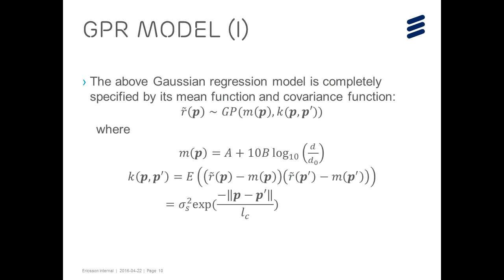So, unlike the conventional RSS model, the Gaussian process regression model introduces correlation between two positions. From the covariance function, we can see that for positions that are close by, it is likely that the RSS values at those positions are closely correlated, and vice versa.